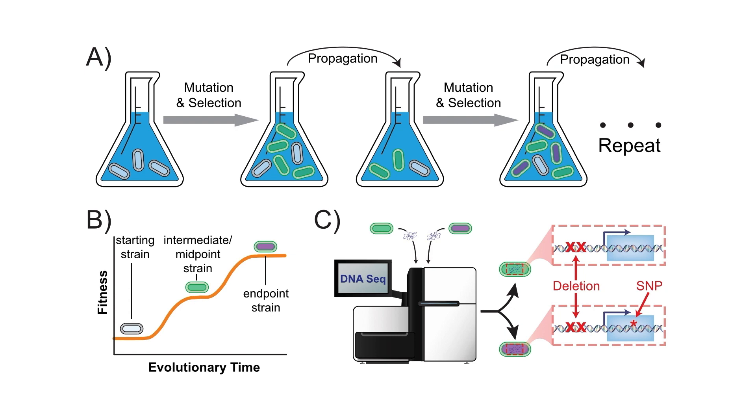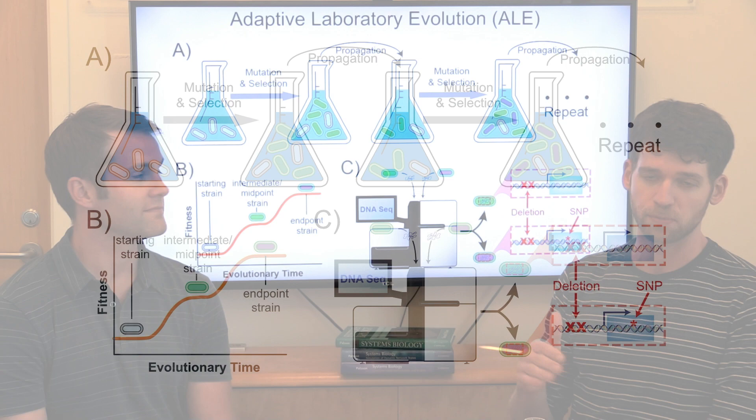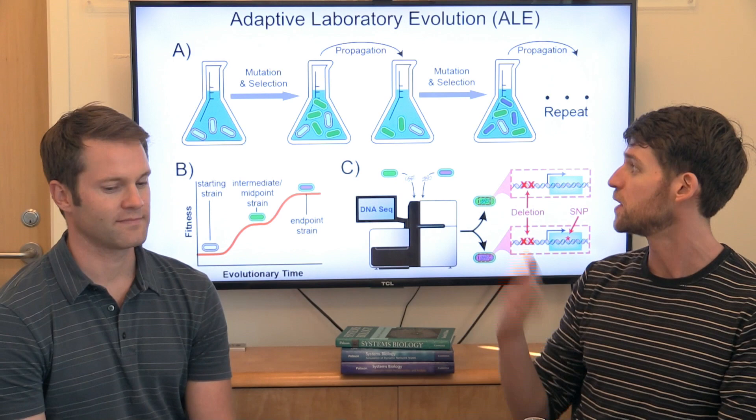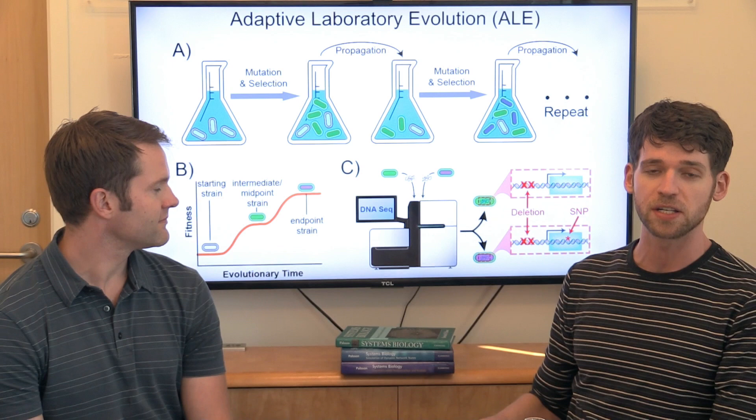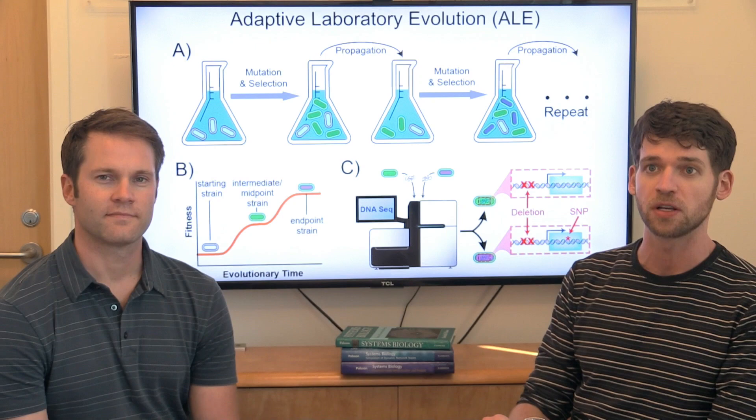and as you do this you get these mutant strains that will slowly fix in the population and the fitness improves over time and then using DNA sequencing technology we can actually figure out exactly what mutations have happened in those strains that are letting them improve their fitness like this.